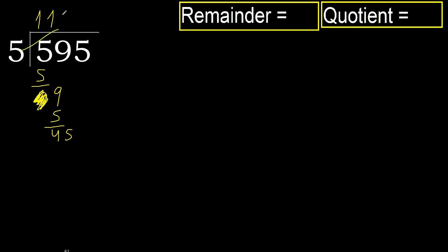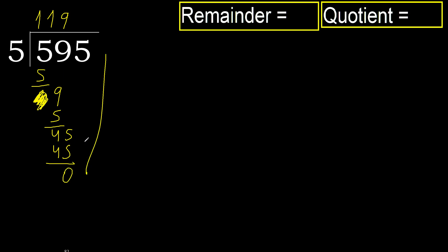45. 5 multiplied by 9 is 45, not greater, ok. Subtract, remainder 0. Next.